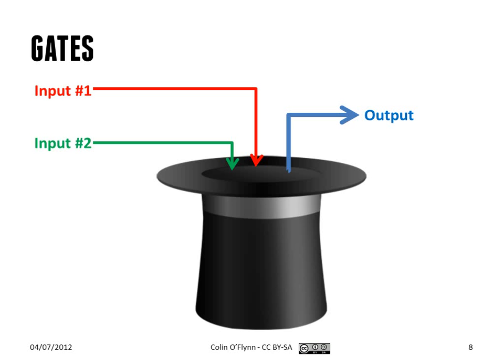Gates are what operate on binary digits. Gates have a number of inputs and a number of outputs. In most examples here, we'll be talking about two inputs and a single output. These are the basic gates we'll consider. You can have a number of inputs and outputs in a Boolean function — in particular, you'll often have multiple input gates, like three or four, which will routinely come up in this class.